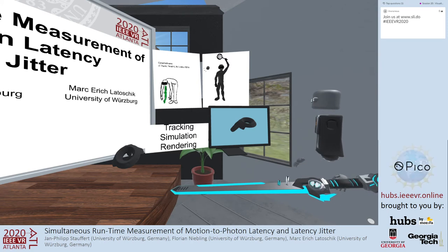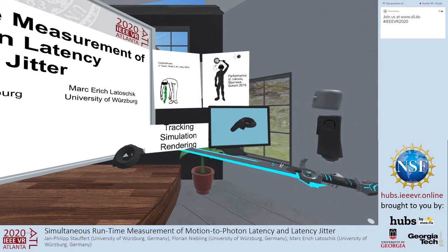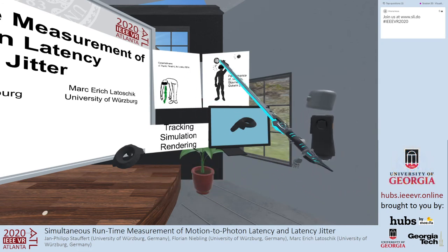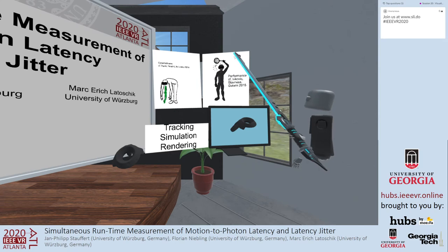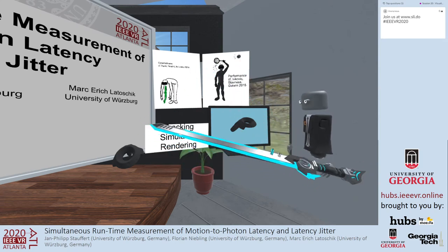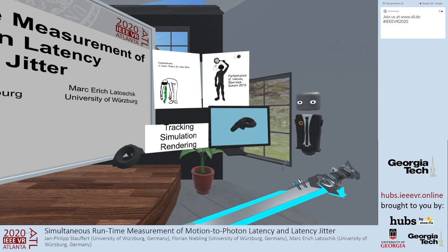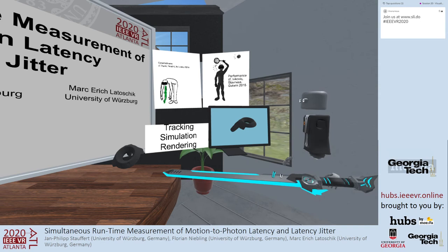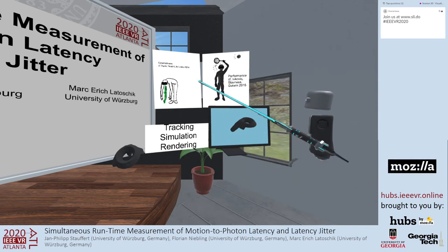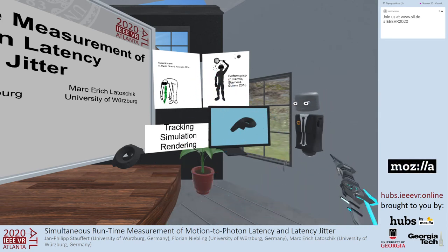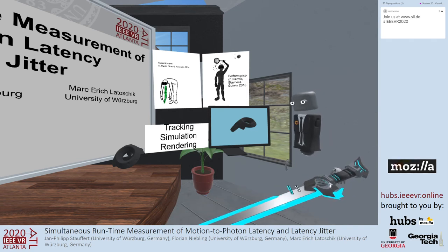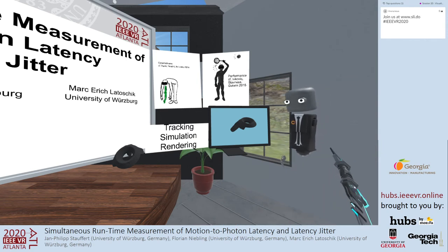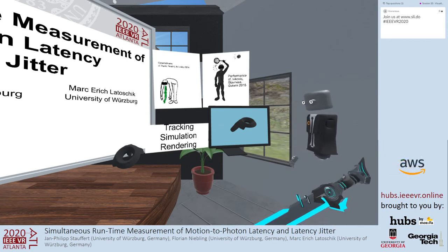The other part is performance. Performance can degrade if motion to photon latency is too high — for example, a user might miss a virtual tennis ball because they couldn't judge how fast it would be. Now that we see why it's important, the question is how can we measure it so we at least know what to expect and if it's too high?